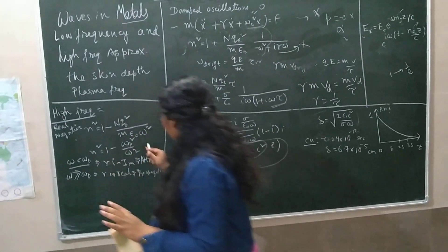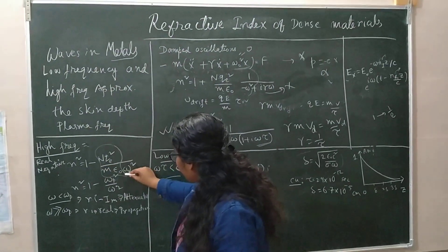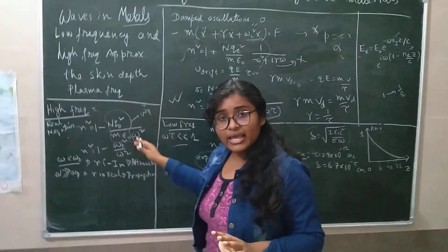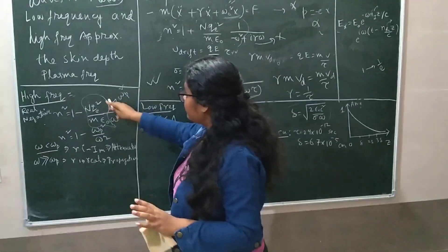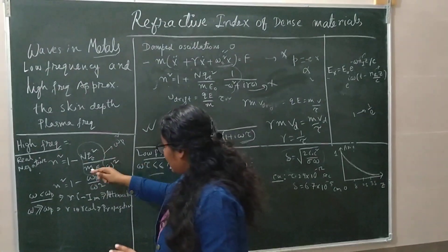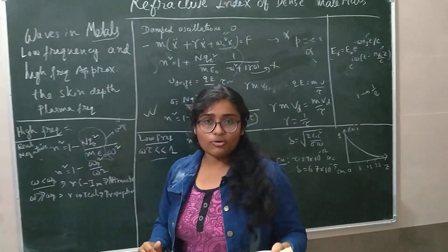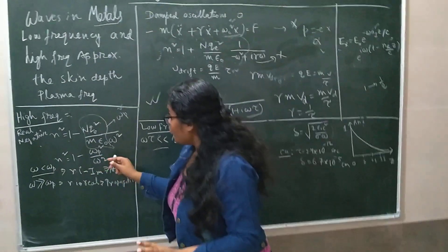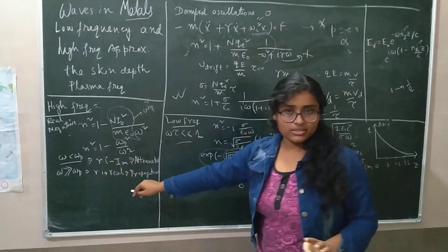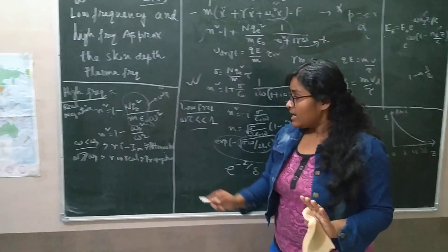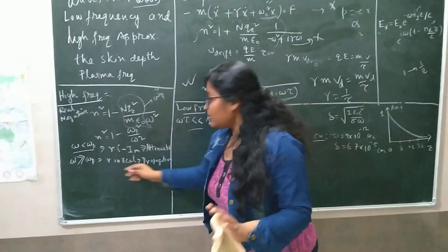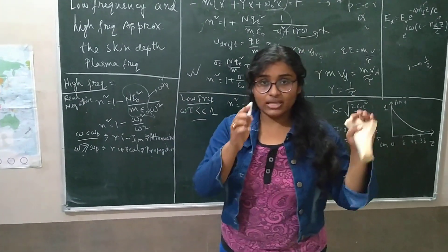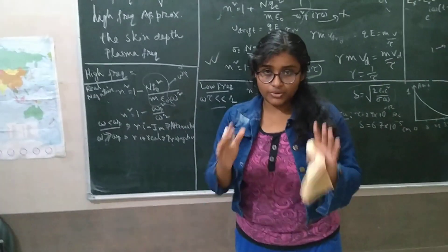Defining ωₚ² = nqb²/(mε₀) as the plasma frequency — a critical frequency that depends on the charge density of the material — we can write n² = 1 − ωₚ²/ω². When ω < ωₚ, the refractive index is imaginary and the wave is attenuated. When ω > ωₚ, the refractive index is real and the wave propagates, meaning the metal acts as a transparent medium for that frequency.